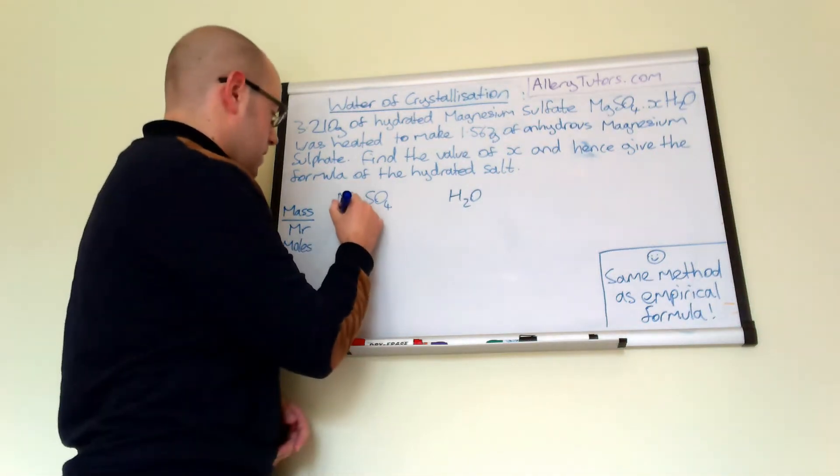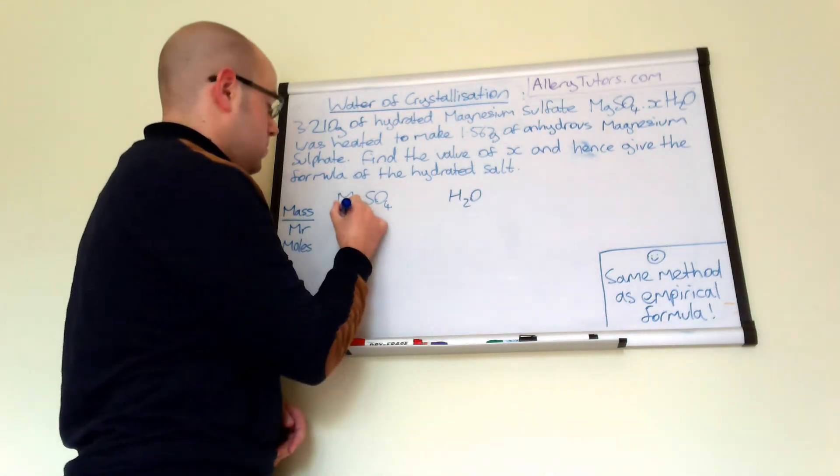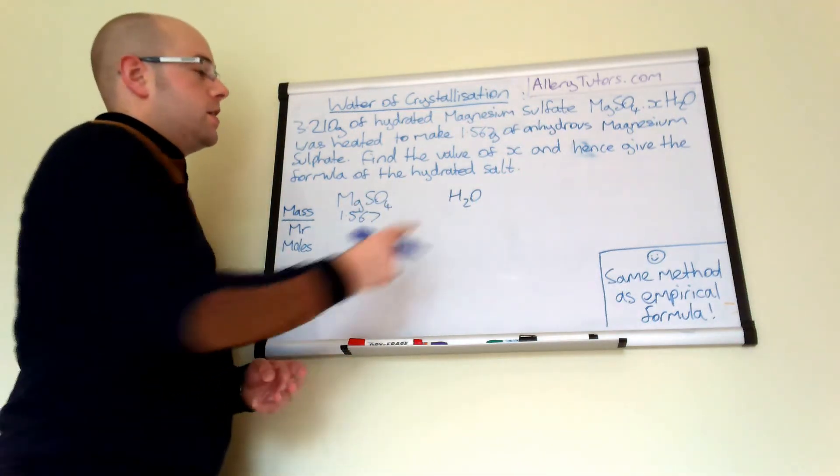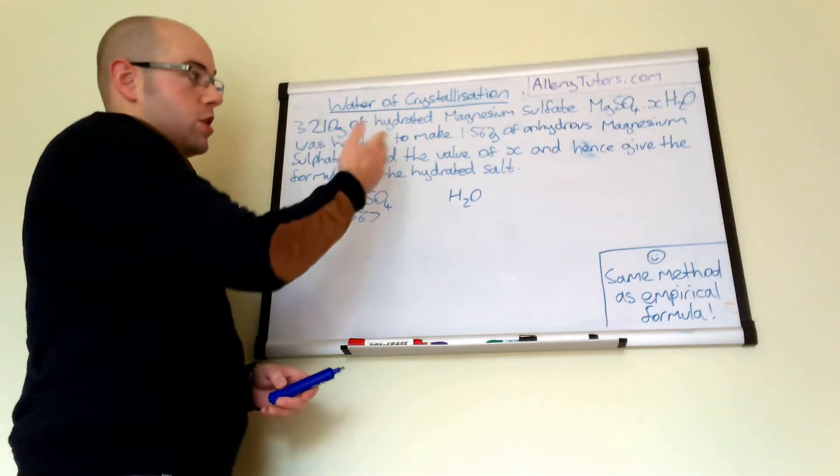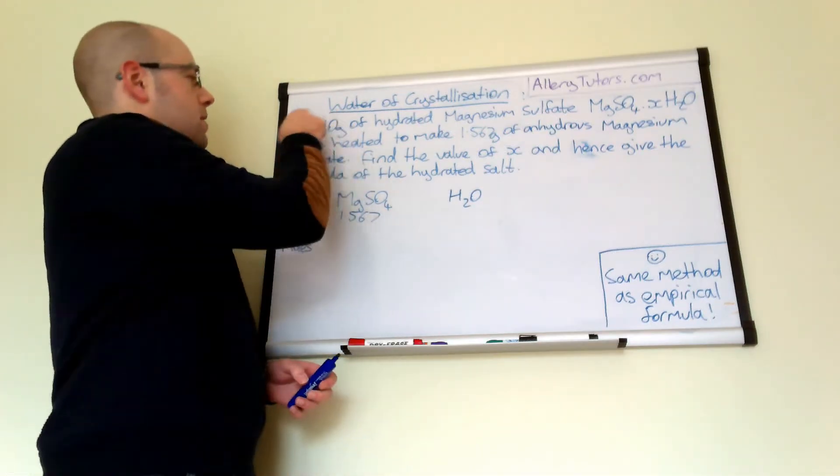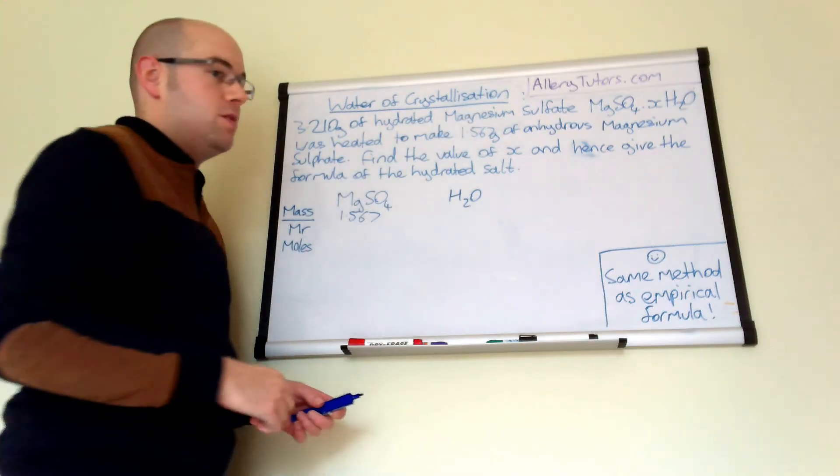So we're going to write that on there. So the mass of magnesium sulfate is 1.567 grams. Now with water we haven't been told that but we can work it out.